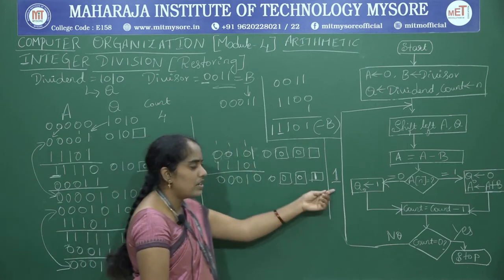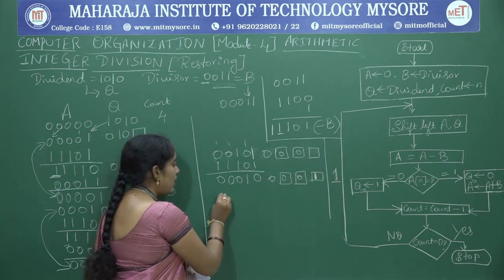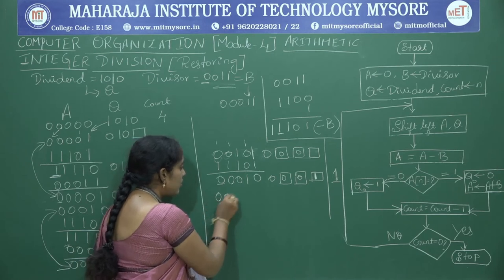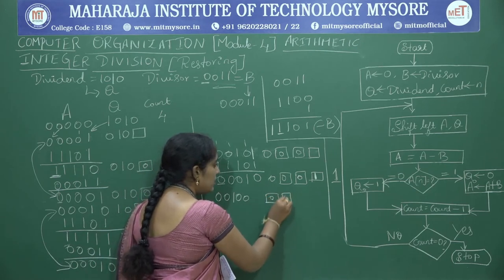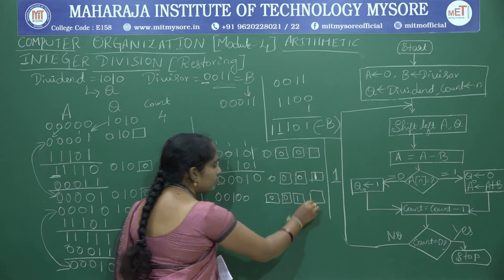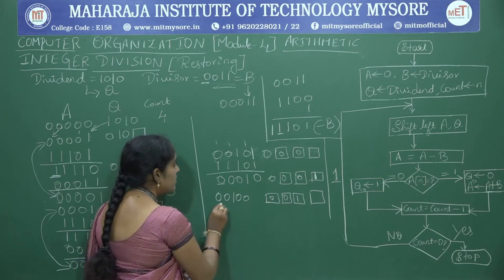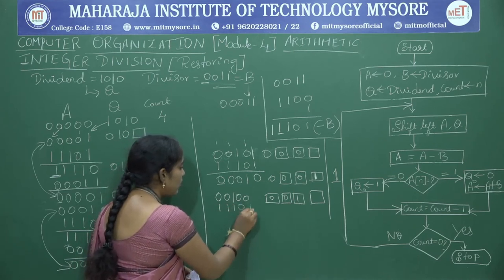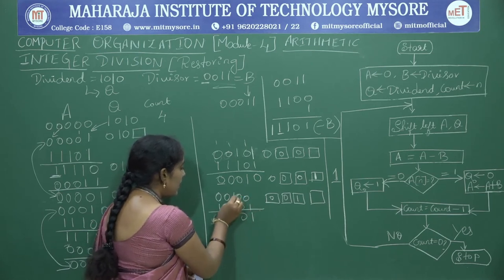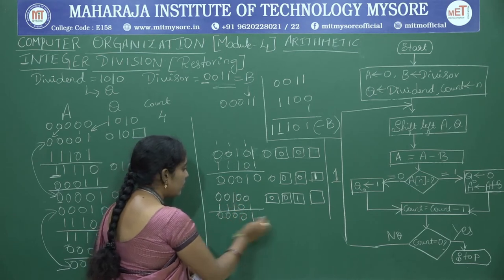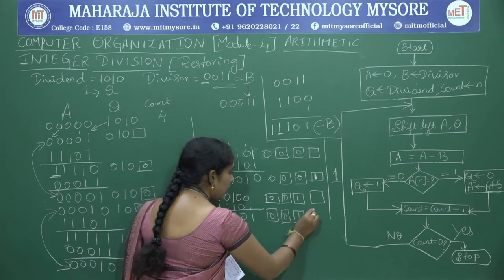Count is 1, not equal to 0, so go back to step 3. Shift left: A becomes 00010 and Q becomes 001 with blank. Next, A equals A minus B: add 11101 to 00010. Result is 00001, with Q showing 001 and blank.